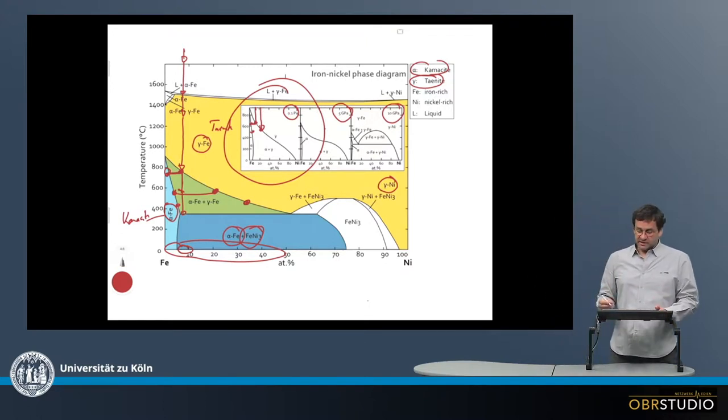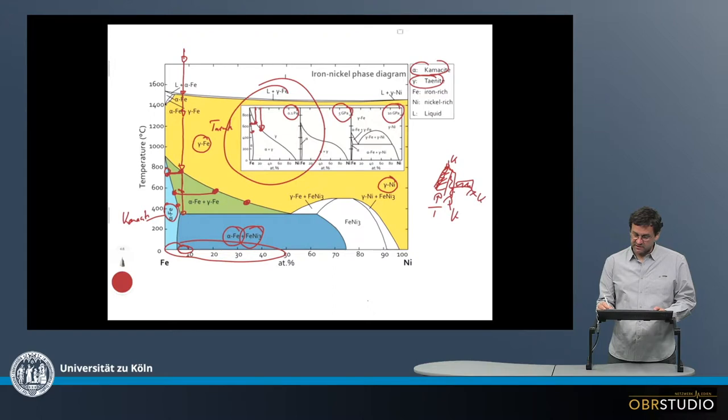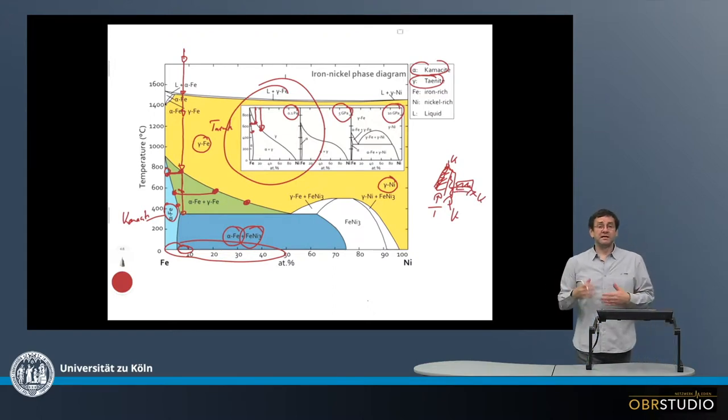The decomposition of this kamacite and taenite goes sometimes into lamellae, for example. There might be lamellae of kamacite, and then maybe there's another lamella which is taenite, and again some kamacite. This would be taenite, this is again kamacite, or different structures. This is then again kamacite and taenite. There are certain lamellae of these two phases.